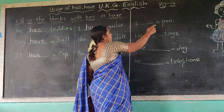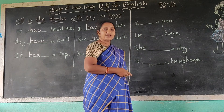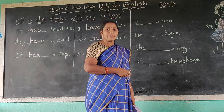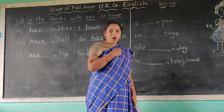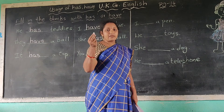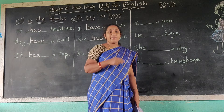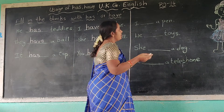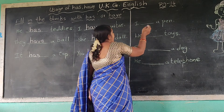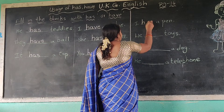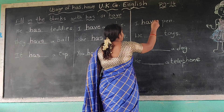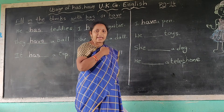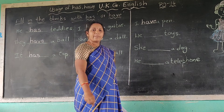I dash a pen. I — has or have? I uses have. I have a pen. Spelling H-A-V-E. I have a pen.